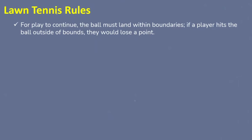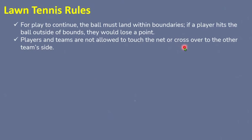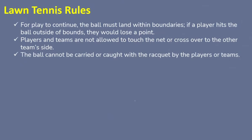Now for the lawn tennis rules. First, for play to continue the ball must land within the boundaries — not beyond the line of the court. If a player hits the ball outside of bounds they lose a point; it is considered out. Next, players and teams are not allowed to touch the net or cross over to the other team's side. Third, the ball cannot be carried or caught with the racket. Fourth, players are not allowed to strike the ball twice — it is considered a foul if you hit the ball with the racket twice.